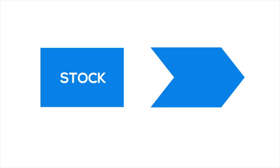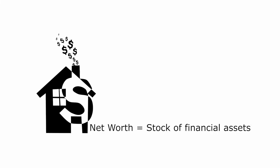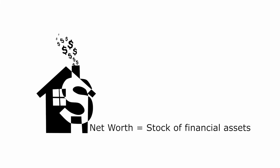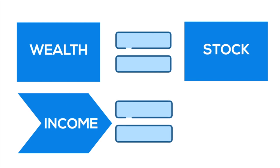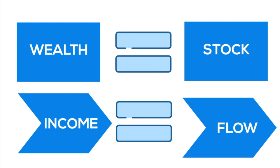The critical distinction between stocks and flows can best be understood by thinking about an individual household. Net worth is the household's stock of financial assets minus liabilities, and its annual income is the flow of dollars generated from employment, dividends, rent, and perhaps other sources. We expect that wealth (stock) and income (flow) are positively correlated because greater wealth often contributes to higher income. Without stocks, there can be no flow.